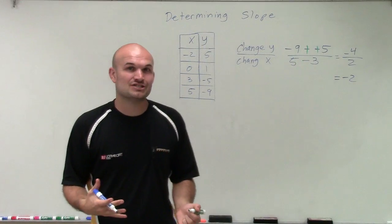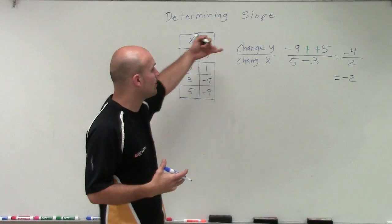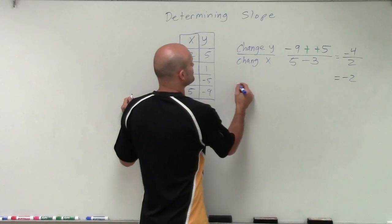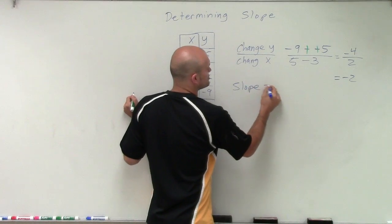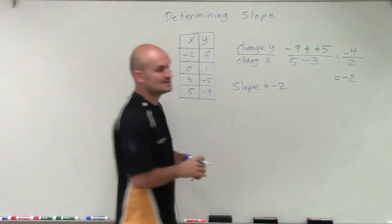So that is going to be the change in my values, or the change in my y-coordinates over my x-coordinates, which we call our slope. So the slope in this equation is negative 2.